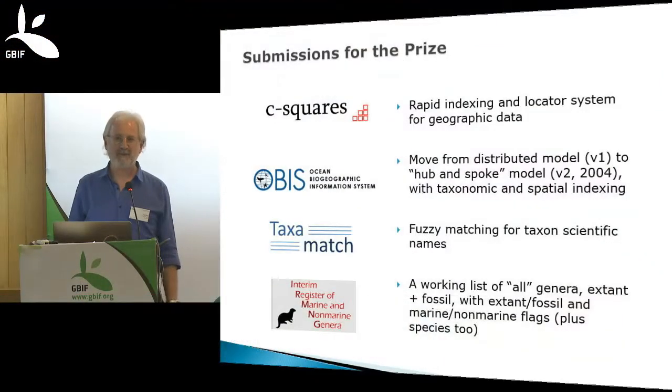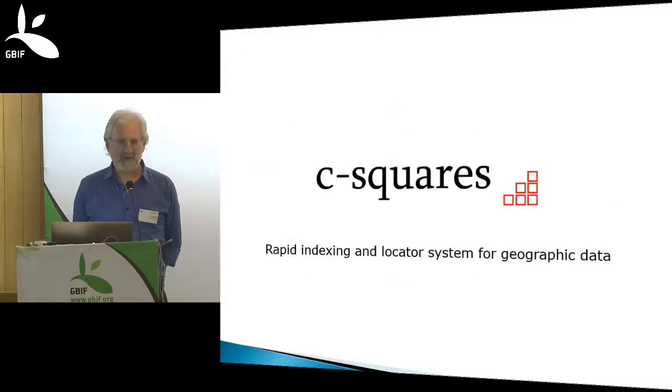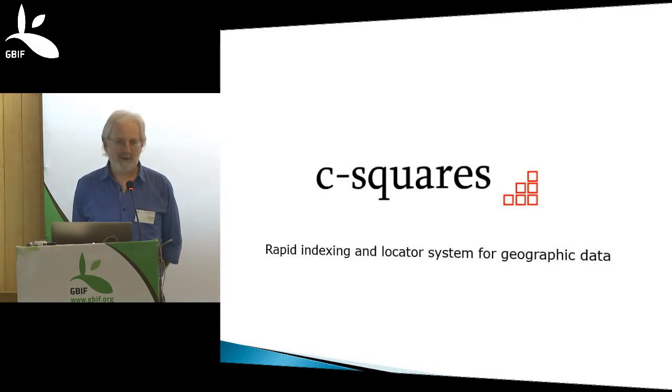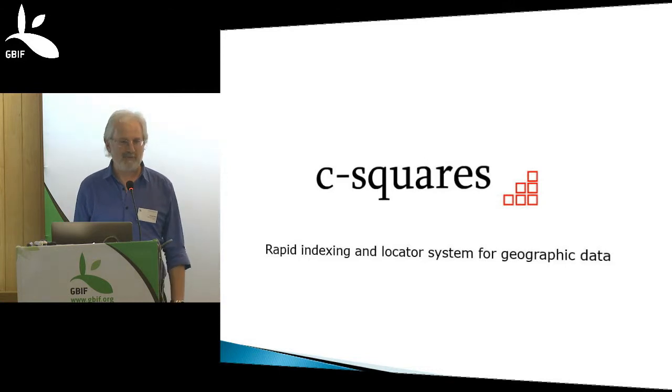Thank you very much, and good afternoon. Today I've selected the four items which I put in my submission for the prize, spanning a period going back about 12 years: C-squares, the OBIS system — which in many ways is a marine equivalent to GBIF — TaxaMatch, which is fuzzy matching for species and genus names, and ERMING. The first two items are really looking back 10 or 12 years, so they're largely of legacy interest. I'd ask you to be kind when you look at what they do compared with what you can do today with wonderful portals, web GIS systems, and amazing databases.